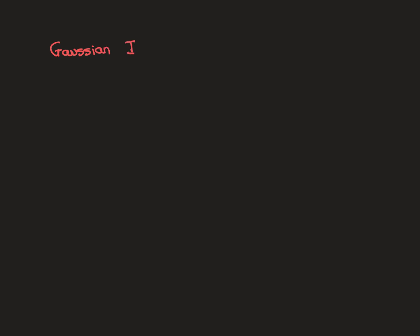In this video we're going to talk about the famous Gaussian integral and how to evaluate it. The Gaussian function is f(x) = e^(-x²), the exponential of minus x squared. This is an important function because it's basically the normal distribution.